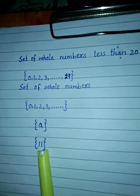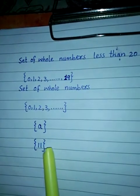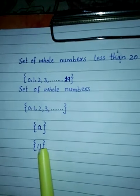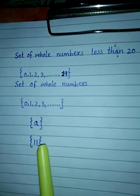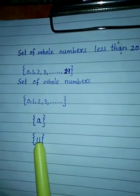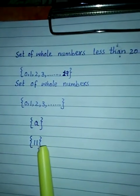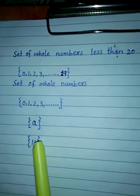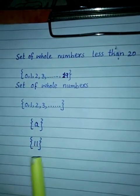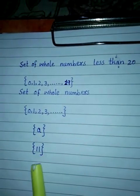جو set لکھا ہوا ہے اس میں '11' لکھا ہے — یعنی دو بار 1 لکھا ہے، لیکن element ایک ہی count ہوگا کیونکہ درمیان میں comma نہیں ہے۔ جب تک comma نہ ہو، چاہے ایک سے زیادہ digits ہوں، وہ single element ہی رہے گا۔ تو یہ unit set ہے۔